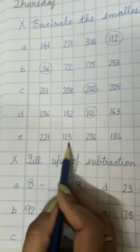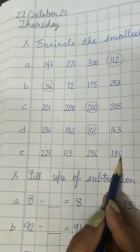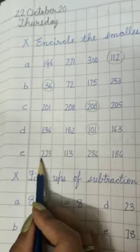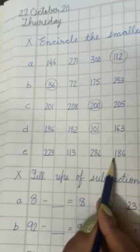223, 113, 286, 186. Let's check the first digits. We have 2, 2, 1, and 1. So we are going to check 113 and 186.